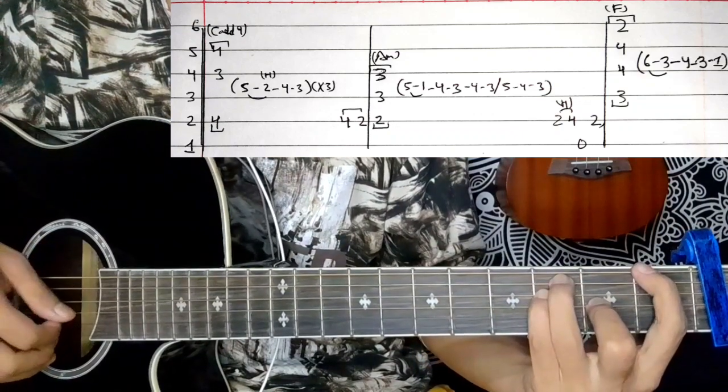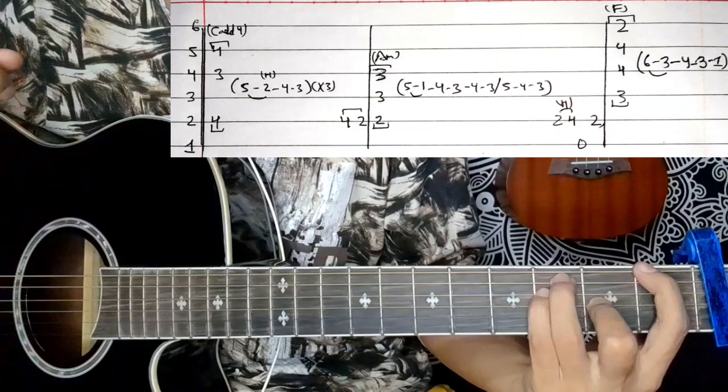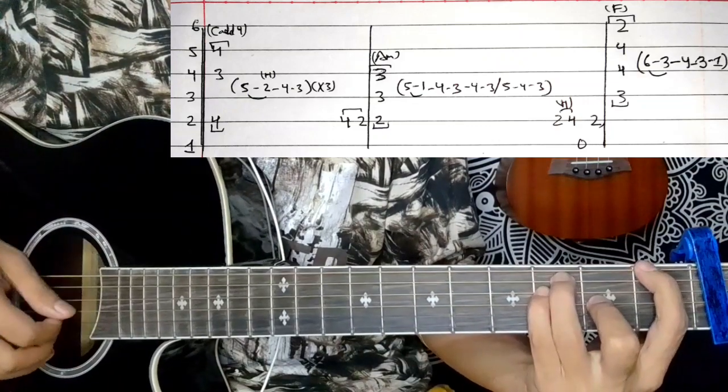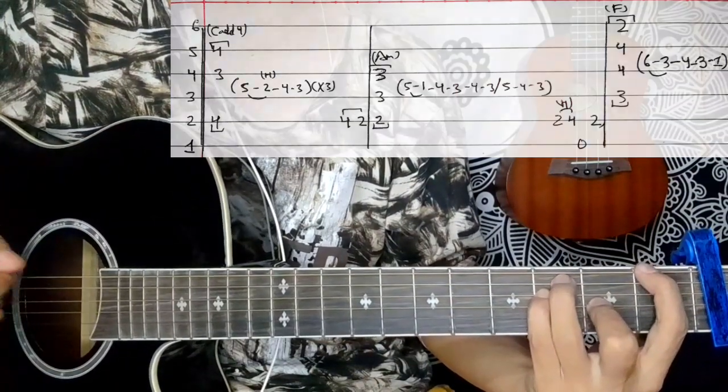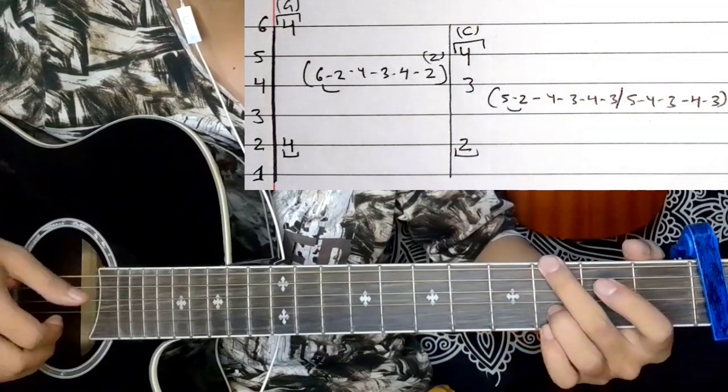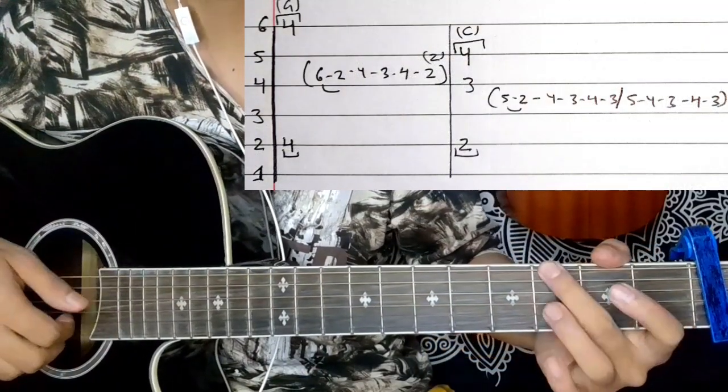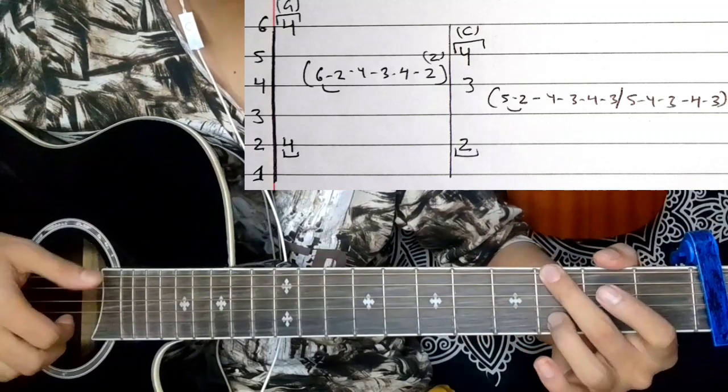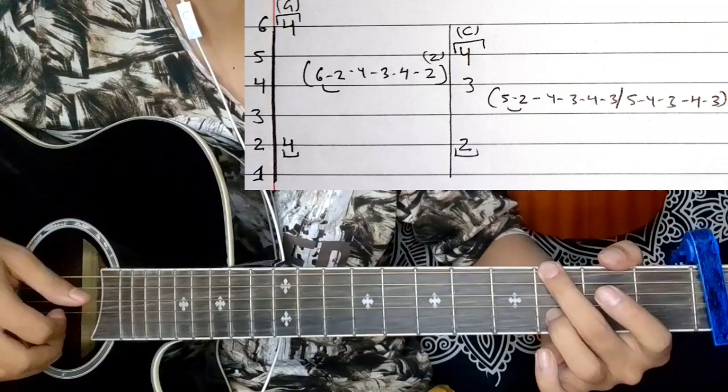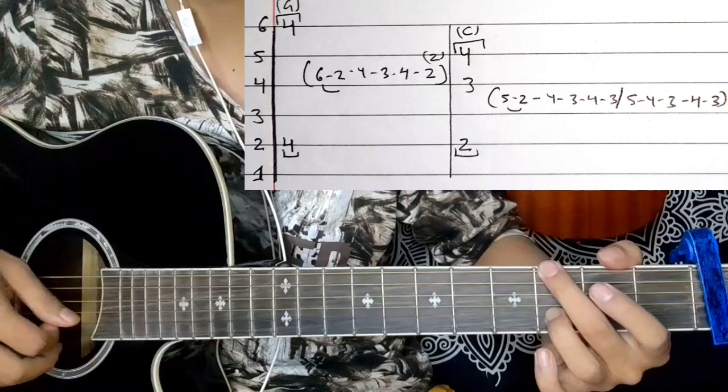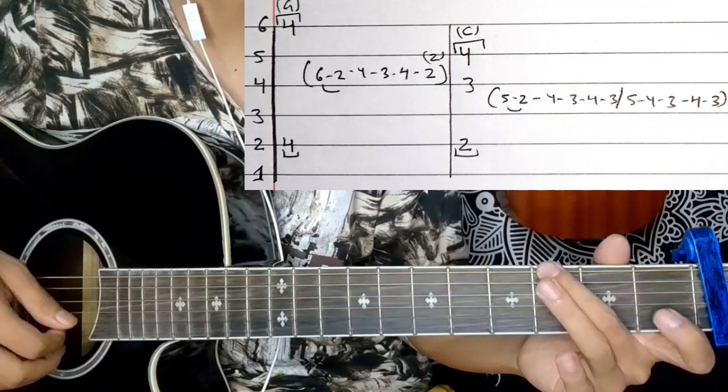Pick 4, 3, 1, open. Then six string and second string fret 4. The picking is on six, then picking 4, 3, 4 on the second string. Remove your finger to press on fret 2.